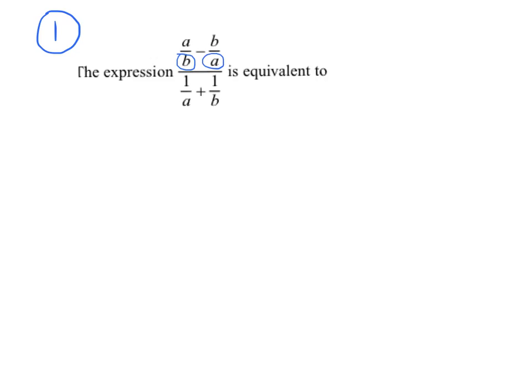We're off and rolling with example one. The expression given here is equivalent to what? We need to find a common denominator. Just look at every denominator — you have the letter B, A, A, and B. You need one of every single term you see, so clearly you need the letter A and the letter B. Our common denominator is A and B.